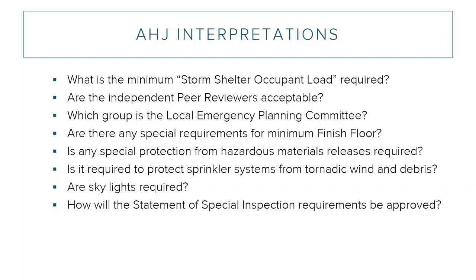How will a statement of special inspections requirements be approved? Chapter 17 of the IBC talks about special inspections, but there are also sections up front in Chapter 1 on quality assurance requirements and plans specifically for shelters. The problem is that it's unclear exactly how those two relate. We cover that, but it's always good to bring these kinds of things up to building officials so that you can have a formal interpretation in writing. We're trying to create in our design guide something that makes this complex conversation as simple as possible — where an AHJ could essentially bless it and say this is an acceptable approach to shelter design.